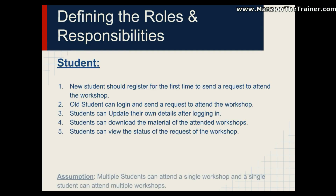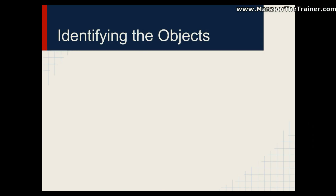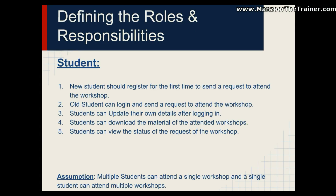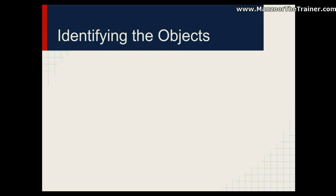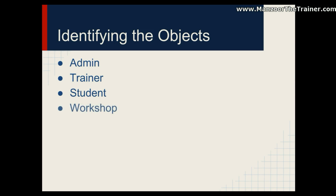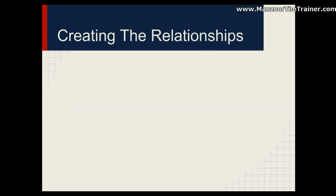Our next part is identifying the objects. By observing the requirements, we can easily list the objects. The objects identified are: Admin, Trainer, Student, Workshop, and Material. Now the next step is to create the relationships between these objects.